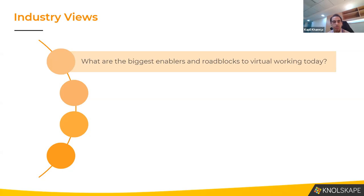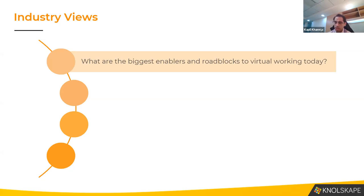Two biggest things stand out as enablers and roadblocks. A lot of organizations would have changed their systems, processes, databases, and policies over the last 18 months to figure out: when you actually get out of this pandemic, would you be ready for a real hybrid working environment? Beyond a point, technology can't add much more value. It's the culture and the systems that make a big difference.